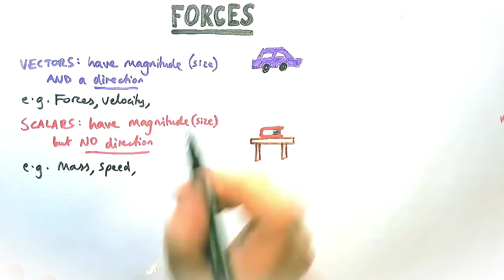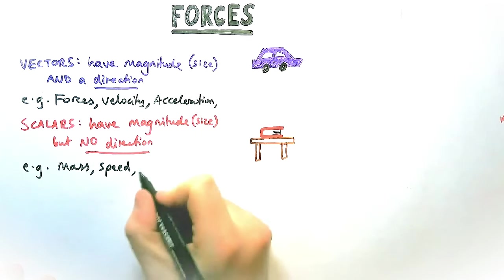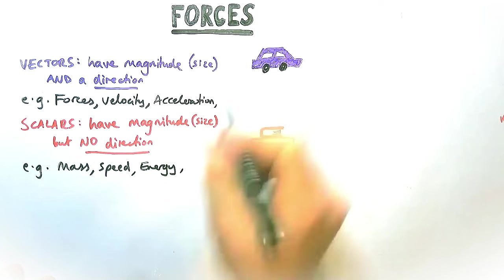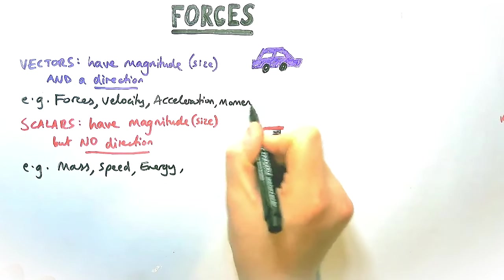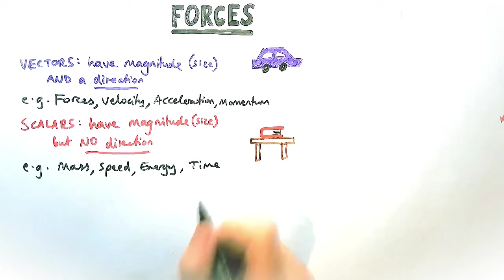Velocity and speed, the one difference between them is velocity has a direction so it's a vector, as is acceleration. Things like energy are not vectors, they do not have direction, whereas momentum is. Time is the other one that is a scalar because it doesn't have a direction as we perceive it.